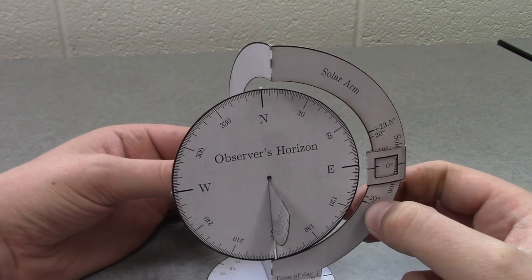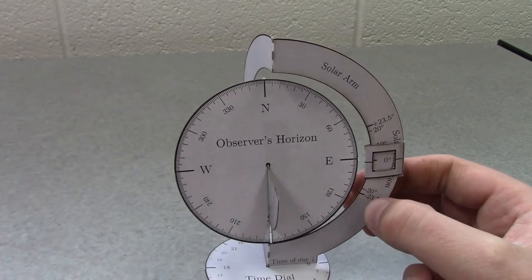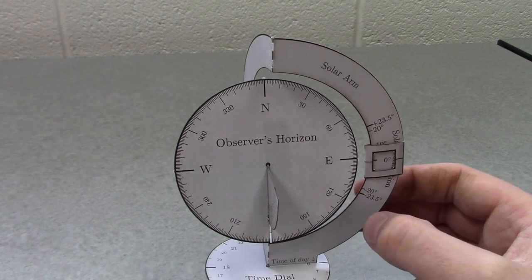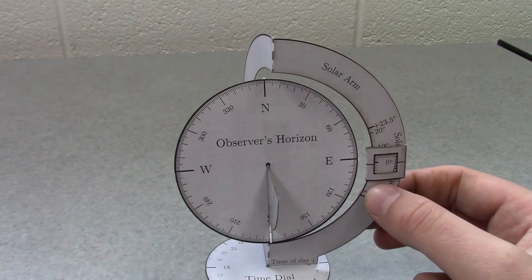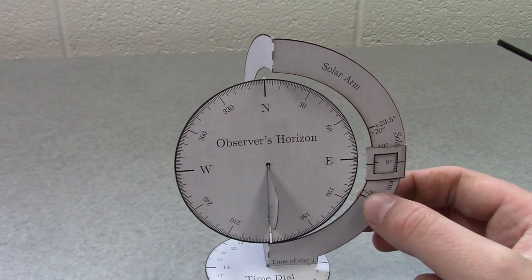And if you notice, that's happening at 6 a.m. Because on the equinoxes, the sun rises at 6 a.m. And this is going to be true no matter what latitude you're at.